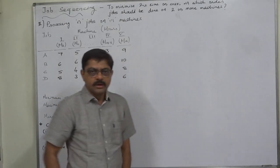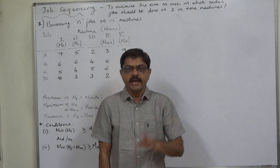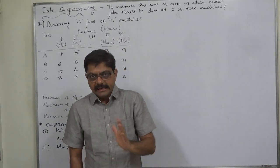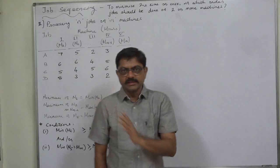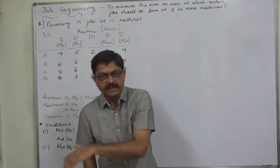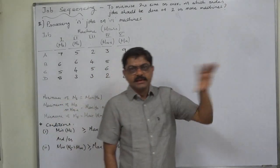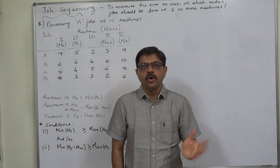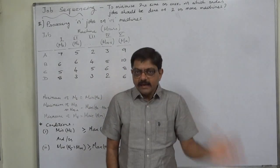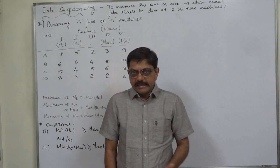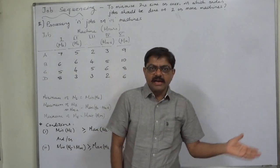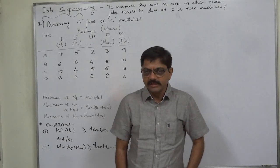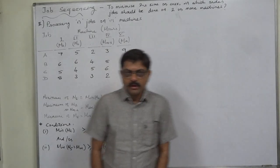According to Johnson's algorithm, the job having the lowest time on machine one is preferred first — it is placed on the left-hand side in the sequencing schedule. The job having the lowest time on the last machine is preferred last, so it is placed on the right-hand side of the job sequencing schedule.